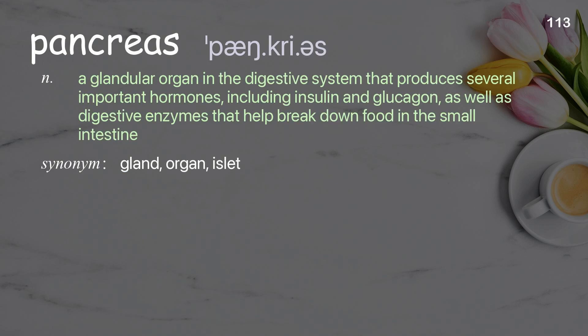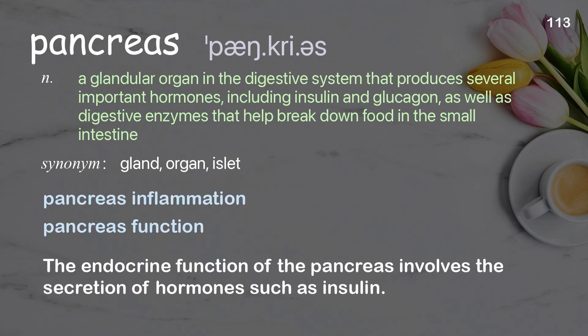Pancreas: a glandular organ in the digestive system that produces several important hormones, including insulin and glucagon, as well as digestive enzymes that help break down food in the small intestine. The endocrine function of the pancreas involves the secretion of hormones such as insulin.